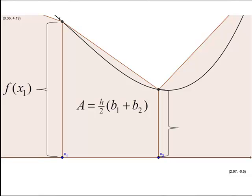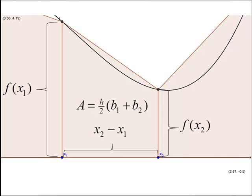Our base two could be this right hand side, which we could represent with f of x2. Then our height is going to be the distance between x1 and x2, or x2 minus x1.